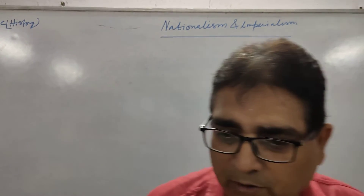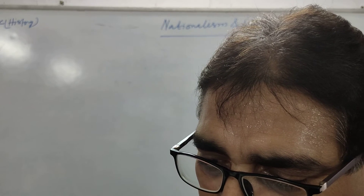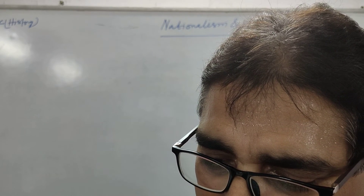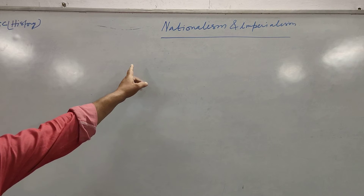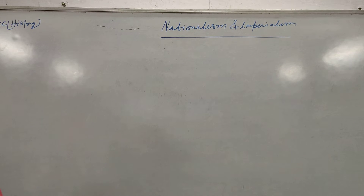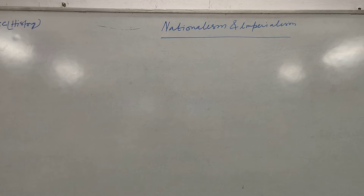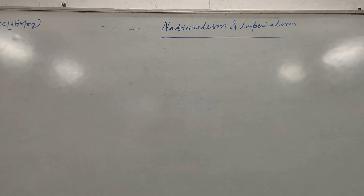Now, the last topic of this chapter is Nationalism and Imperialism. We should understand what nationalism means — nationalism means patriotism, the unity of people on the basis of race, traditions, cultures, and birth. Imperialism means rule by monarchy. Both things are totally different.